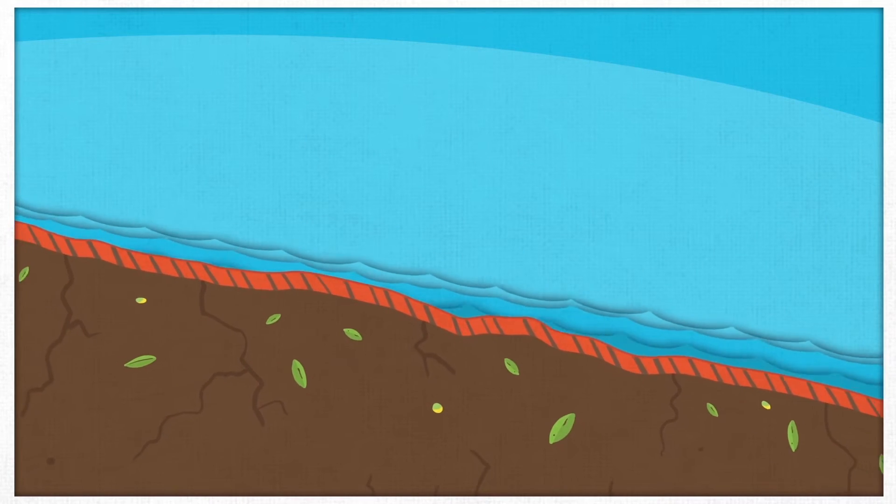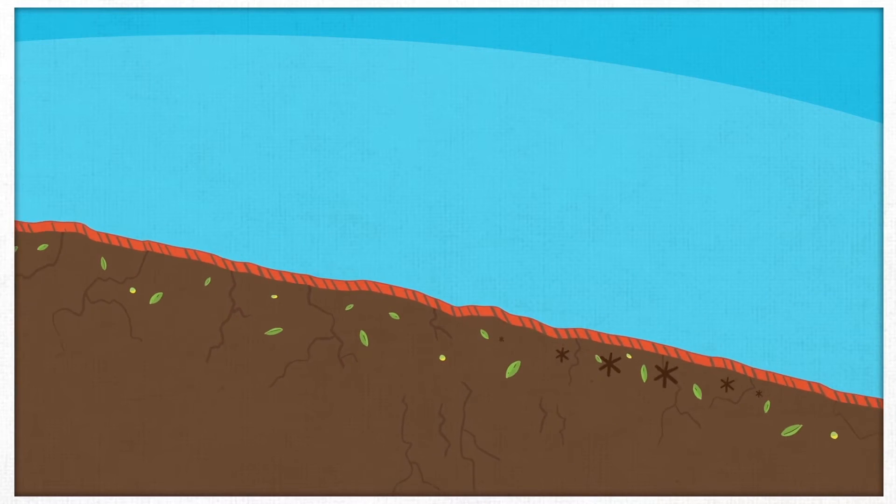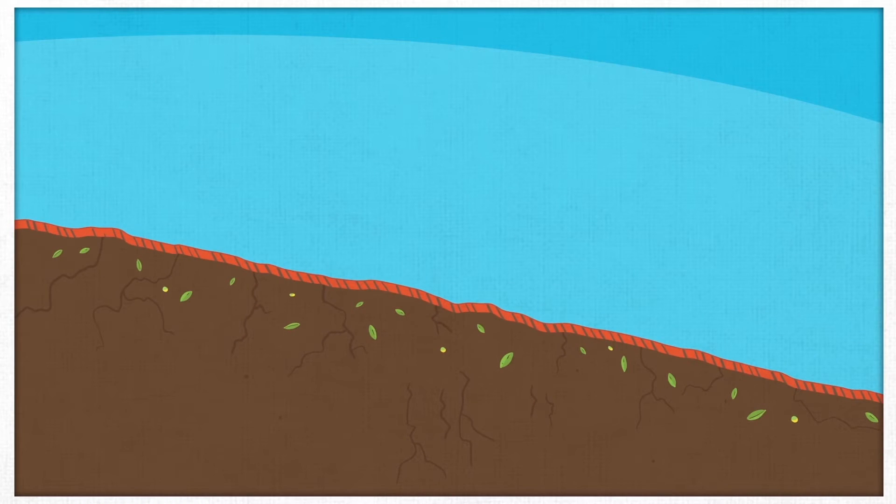And because the soil is bare, it is impossible for the rain to infiltrate into the earth. Most of the water flows away unutilized, and the area remains dry and hot.